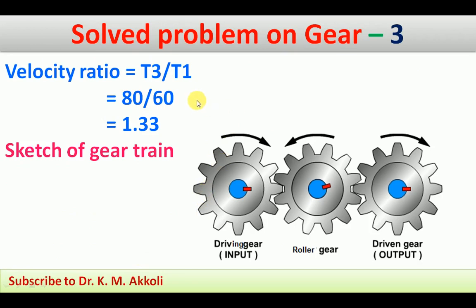The velocity ratio is asked. The velocity ratio is always concerned between the driven and driving gear — the intermediate gear is not considered. Therefore, velocity ratio equals T3 by T1, which is 80 by 60, giving 1.33.